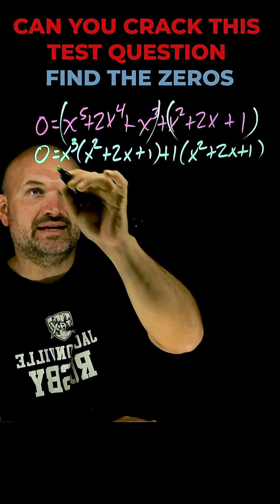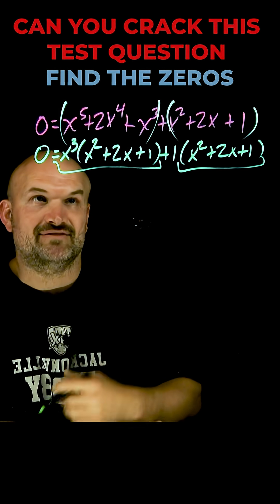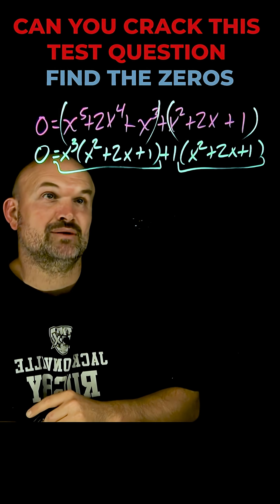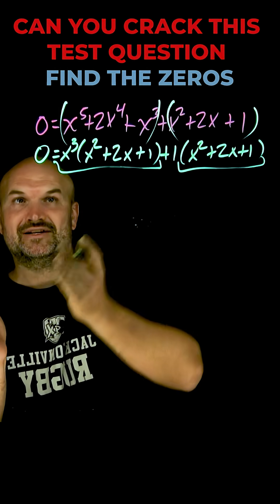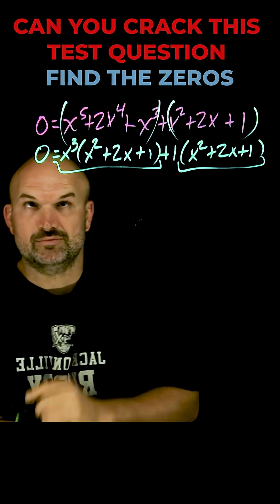Okay so now we need to look at these two terms and these two terms and say what do they have in common. Well again they share a x squared plus 2x plus 1 so let's factor that out and rewrite over what's left over which is an x cubed plus 1.